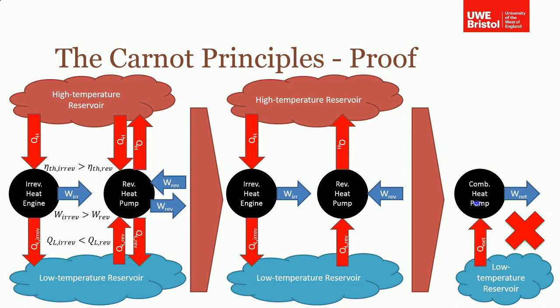It's not connected to two reservoirs. This can't happen. This violates the second law of thermodynamics. Therefore our original assumption must have been wrong. And so it is true that an irreversible heat engine must have a lower efficiency than a reversible heat engine connected to the same two reservoirs.